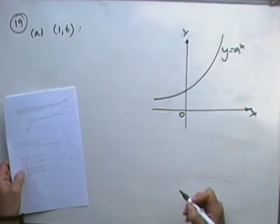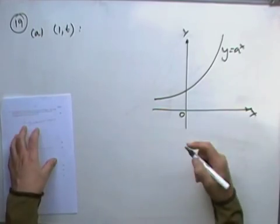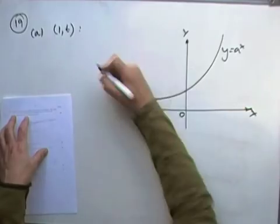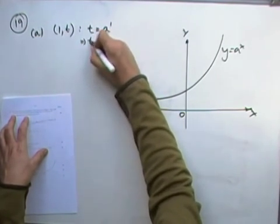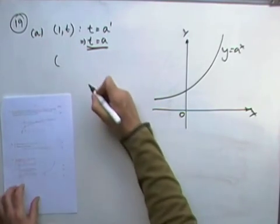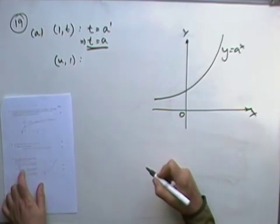If the point 1t is on the curve, write down the value of t. Well, let's just feed it into the equations, and that's a coordinate equation. So that means 1 goes in for x, t goes in for y. So t will equal a to the 1, which means t is just equal to a. The other point was, it says,